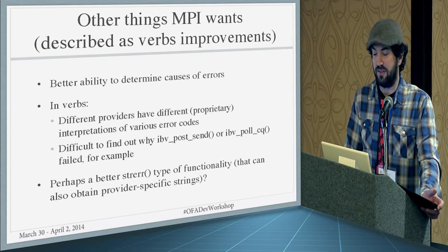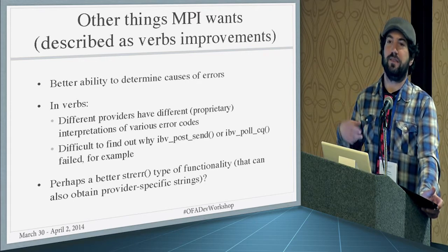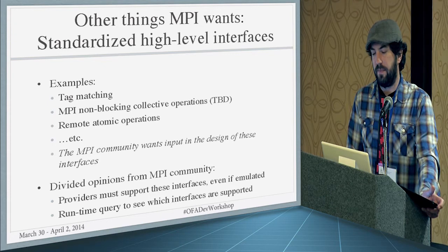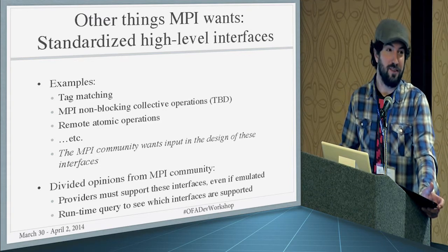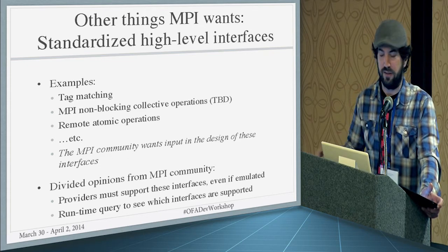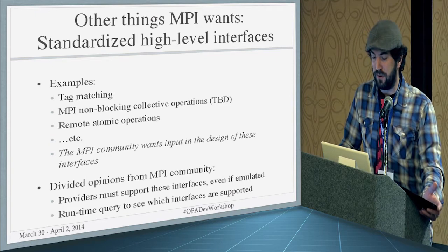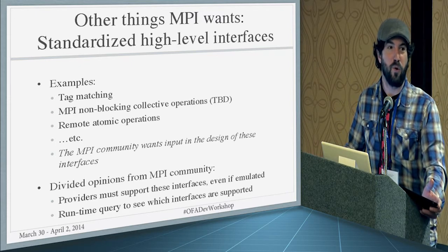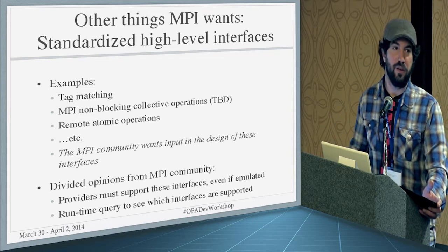A really great feature would be completion at the remote peer for RDMA write, and the ability to look up whether loopback is supported on a particular device. Right now the best we can do is try to set up a local QPair and see what happens. We want a clear delineation about what functionality must be supported versus what is optional, because Verbs functionality is wildly different between different providers right now. Better abilities to determine cause of errors — an error code doesn't necessarily have the same meaning on different hardware. It would be great to specify exactly what the hardware error is, maybe something like a string-error-style functionality. And standardization of high-level interfaces: right now we have two tag-matched interfaces, MXM and PSM, both essentially solving the same problem. Some providers must support these interfaces; others like me would like to be able to query it and work around it — we think we can do better than software emulation in some cases.